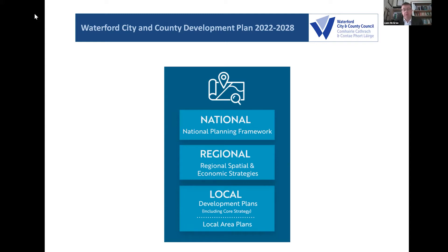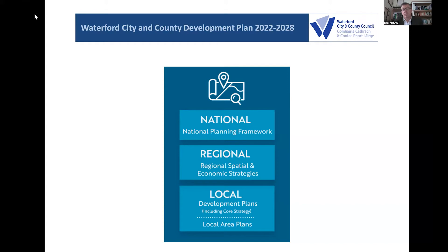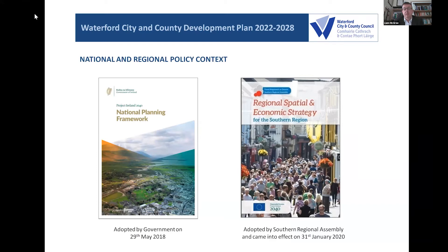Below the city and county development plan there's a further layer of what are called Local Area Plans, typically for built-up urban areas. We currently have Local Area Plans for Tramore, Piltown, and Lismore. Once the city and county plan is in place as a broad framework for the next six years, we'll start filling in the detail through local area plans for larger settlements — Dungarvan being the obvious one — as well as Tramore, Dunmore East, and the Gaeltacht area, which has never had one before.